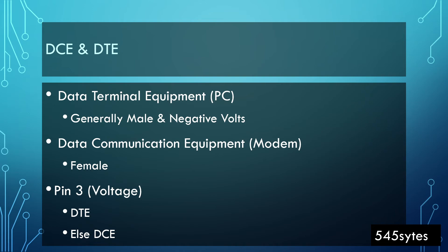There is another concept of DCE and DTE you need to understand. DTE is the Data Terminal Equipment and DCE is the Data Communication Equipment. Generally the male connectors are DTE type — this is not 100% always the case, but male ones are generally DTE. DTE is typically present on your PC, and on the modem side they are DCE with female connectors.